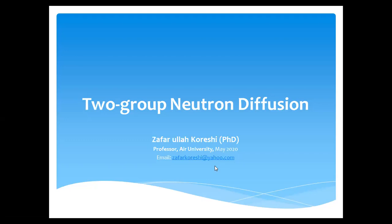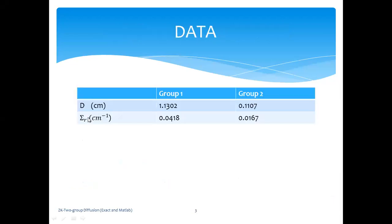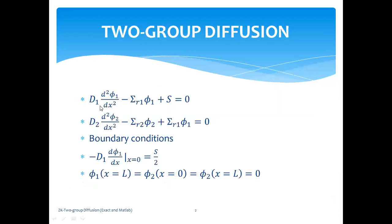Let's look at our model. These are the two equations which represent the balance of neutrons coming in from the left side going out of the right side. For the first group, we've got D1 d²φ1/dx² minus sigma_r1 φ1 plus S equals 0. The leakage term, the removal term—removal would mean capture in group 1 as well as downscattering into group 2. If you've got any other direct source, independent source in this slab, then you can put it over here in the balance equation.